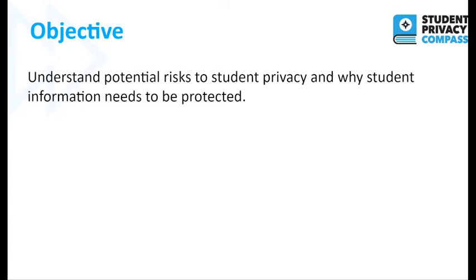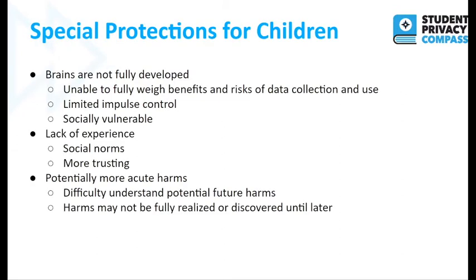Before we dive in, let's talk about why there are special protections — both ethically and legally — for children. Among other things, their brains are not fully developed, so they are unable to fully weigh the benefits and risks of data collection and use: what they may post online, what they may share with their peers or with others, what they may say in chat or in person. They also have limited impulse control and may react in a way they regret later.